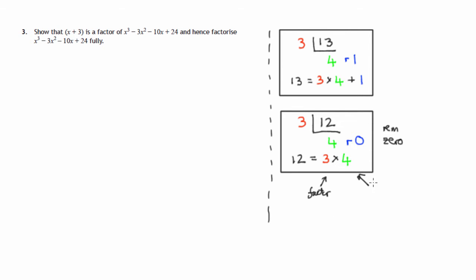Also, 4 is a factor. So we've ended up factorising 12, 3 times 4. In this case up here, the remainder was non-zero, so we're not producing factors of the number 13.